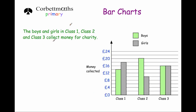The next question says the boys and girls in class 1, class 2 and class 3 collect money for charity, and this is the chart. It's called a dual bar chart because each class has got two bars. The key shows that the boys are the green bars and the girls are the grey bars. Vertically we have the money collected — it goes 0, 4, 8, 12, 16, 20 and 24. Going up in 2s, so: 0, 2, 4, 6, 8, 10, 12, 14, 16, 18, 20, 22 and 24.